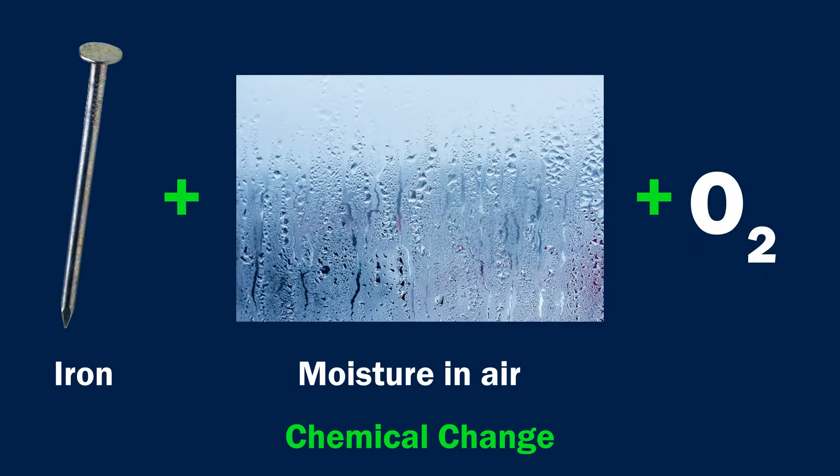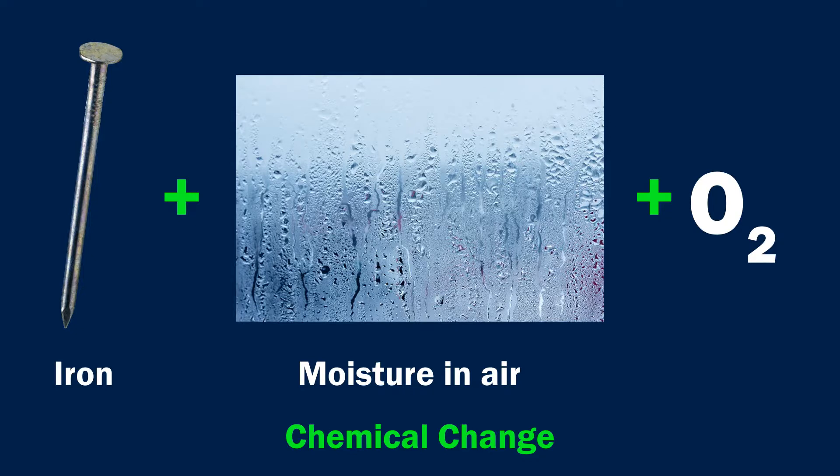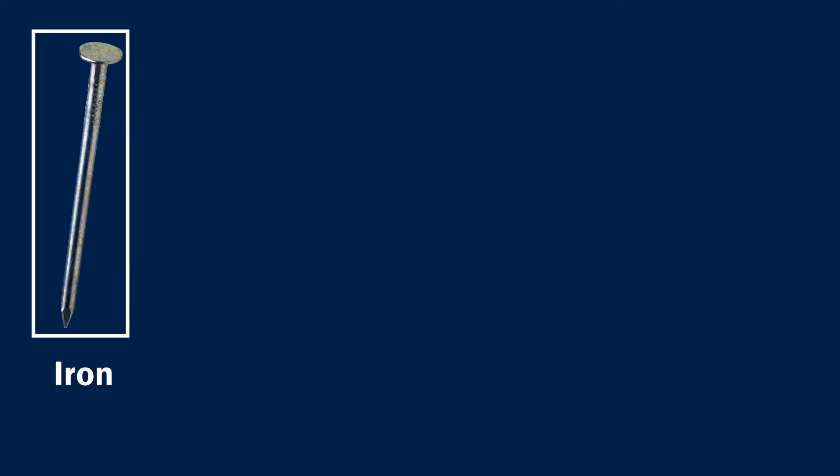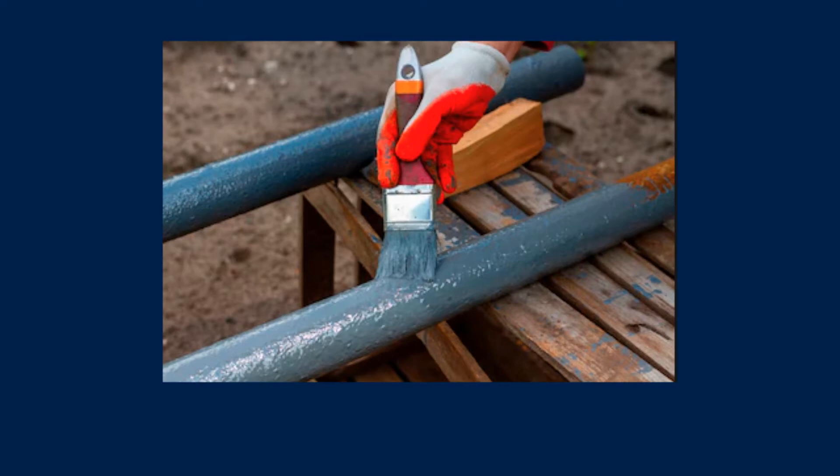Rust is a product of a chemical change in which iron reacts with atmospheric oxygen and water. Rust can be prevented by minimizing contact between iron and air. This is generally achieved by applying paint on iron surfaces.